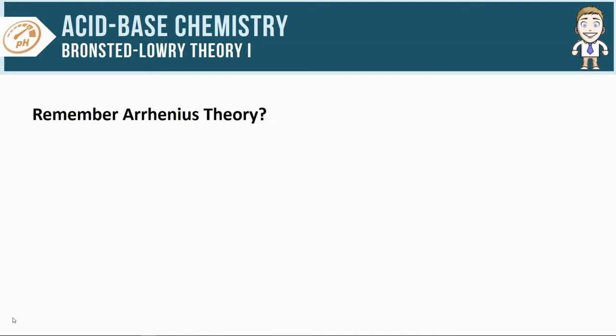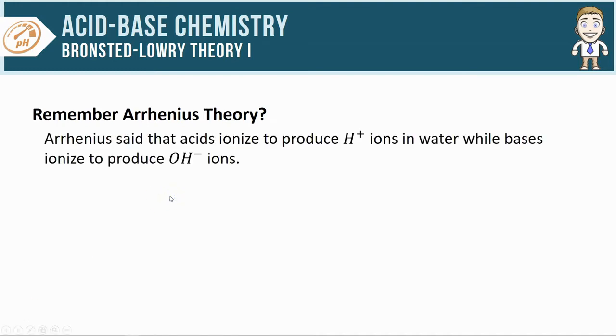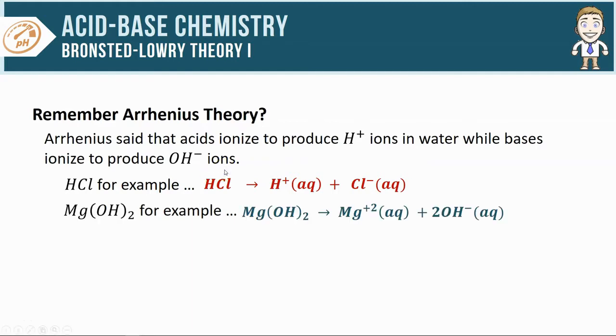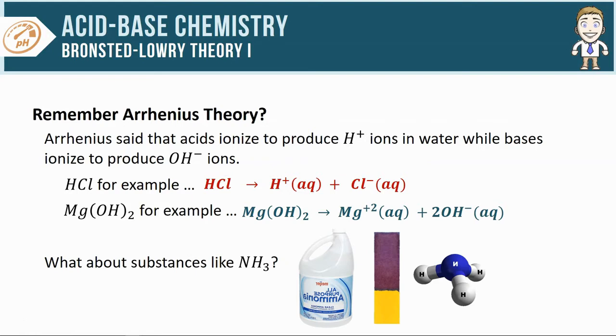First, remember in the last video we looked at the Arrhenius theory of acids and bases. Arrhenius says that acids will ionize to produce H+ ions, like this hydrochloric acid shown here, while bases ionize to produce hydroxide ions, like the magnesium hydroxide shown here, with the problem of not being able to explain substances like ammonia, which clearly don't contain hydroxide and yet are also clearly bases.